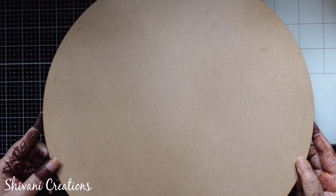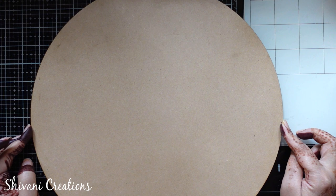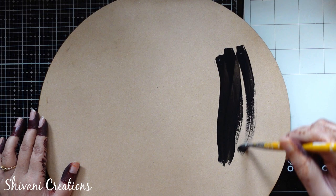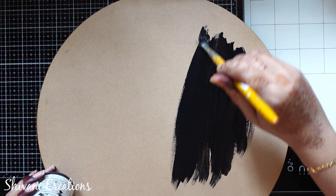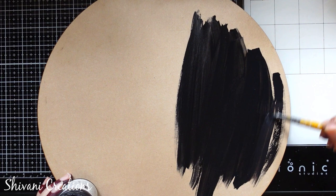So here I am taking this MDF base which is having 6 mm thickness and this is 14 inches in diameter. First of all, I am going to color this whole base using black chalk paint. I would prefer to use chalk paints only, no acrylic colors, because chalk paints give very nice matte finish look. It will not make any sticky base after doing all the mandala work. The coloring is done. I have colored from both sides and it's completely dried now.